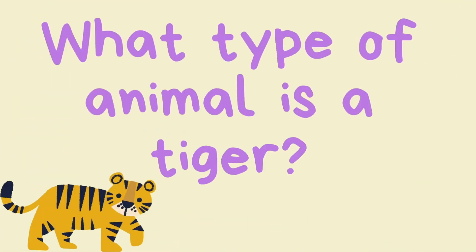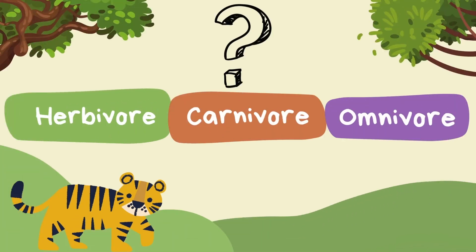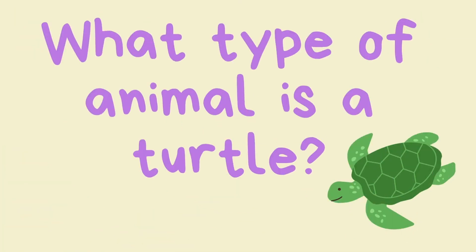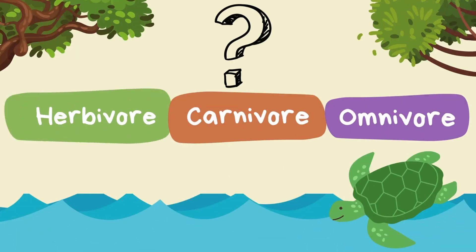What type of animal is a tiger — herbivore, carnivore, or omnivore? It's a carnivore! What type of animal is a turtle — herbivore, carnivore, or omnivore?